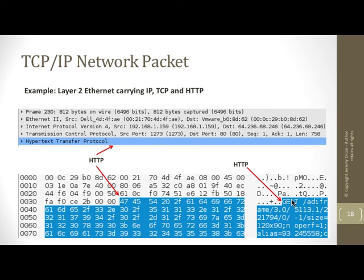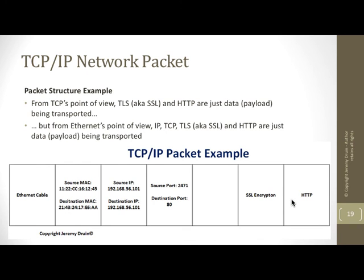Any questions on layer 7, 6, or 5, or the application layer in general? Here's an entire packet that's been put together, at least diagrammatically. The important takeaway is that all the data is really going across the wire in a straight line — it's not actually neatly organized in rows like we see in our tools.